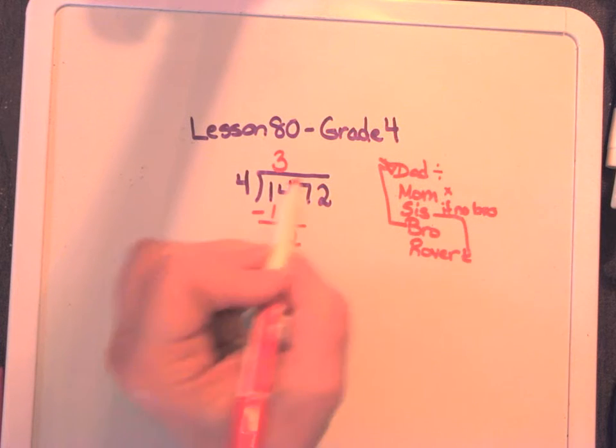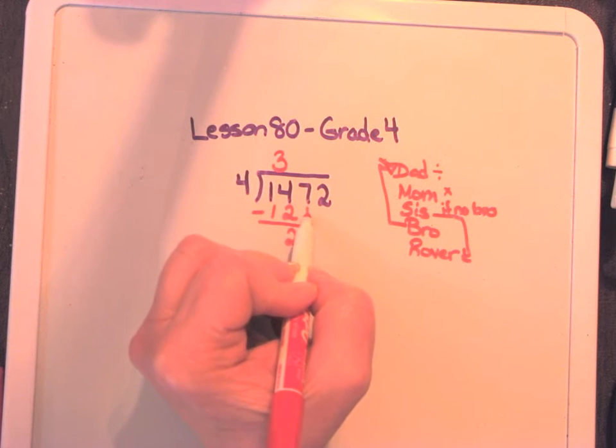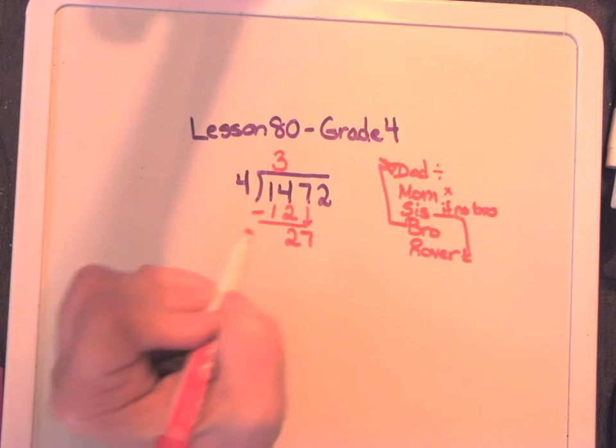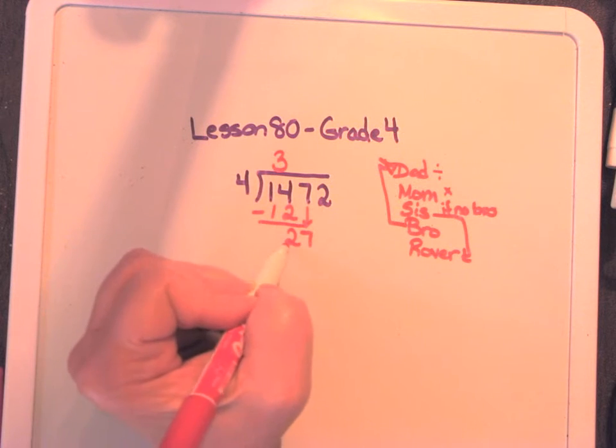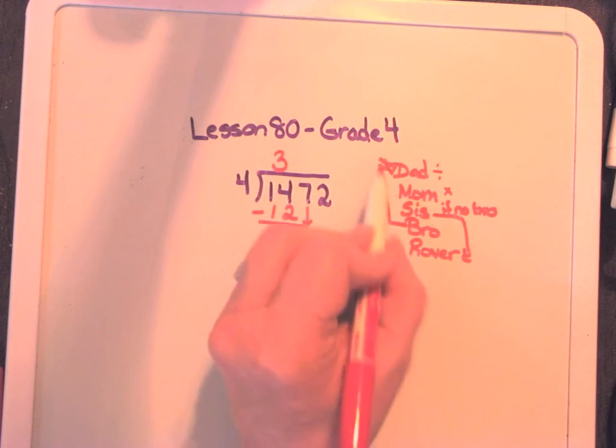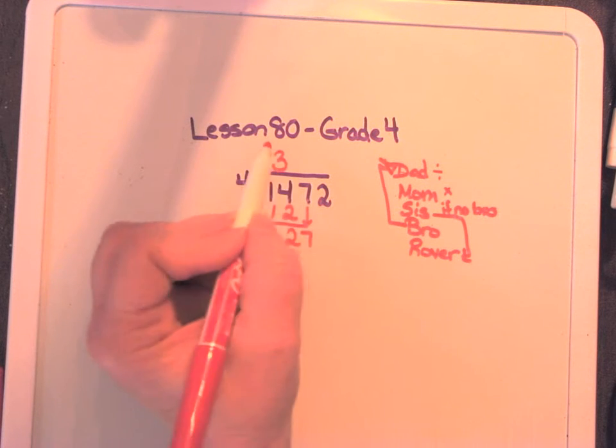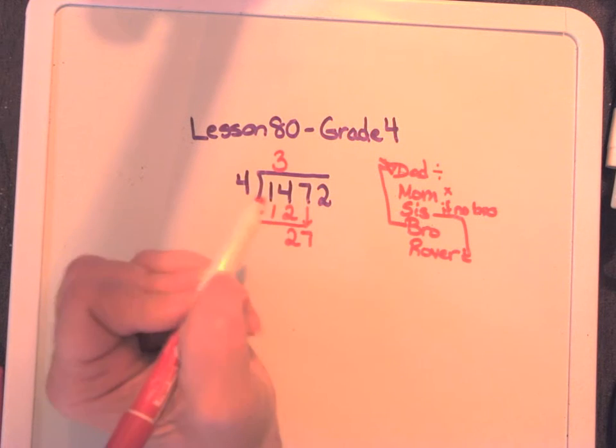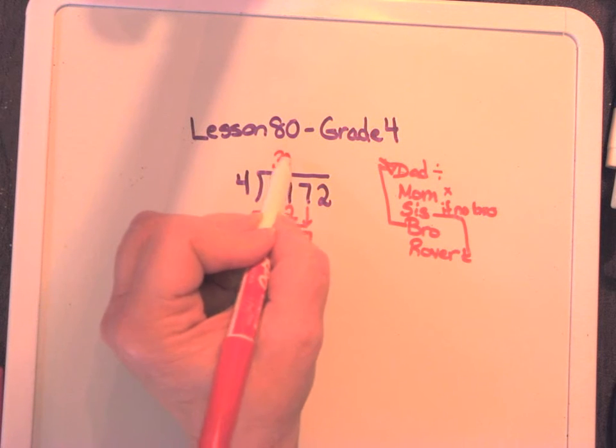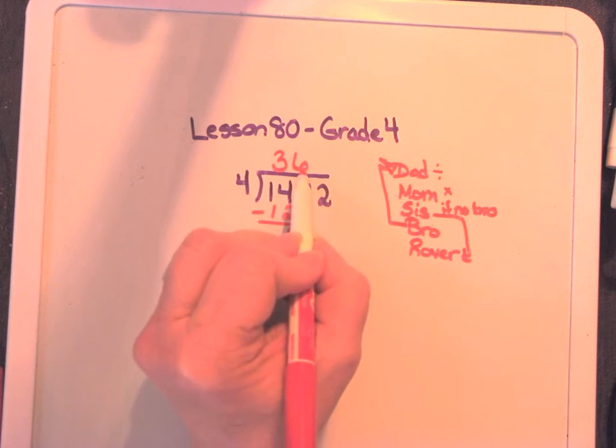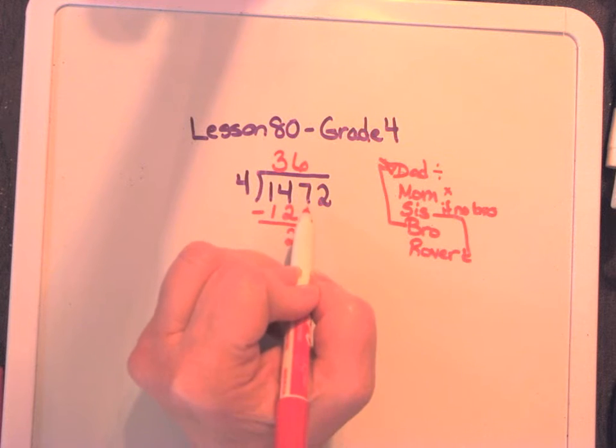Now we bring down, bring down the brother, one brother at a time, brother's in town. So bring him on down. There he is. Now we divide by four again. How many fours? Because he's going to talk to dad. How many fours can we get out of 27? We could get, that's hopefully you said six. And remember that my number goes right above the brother.